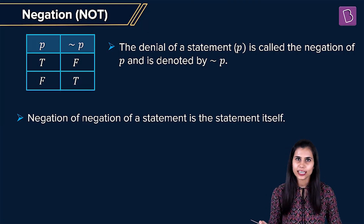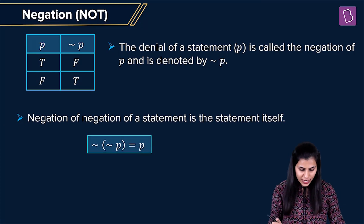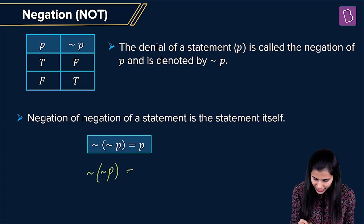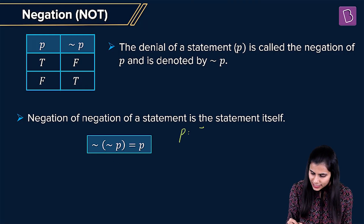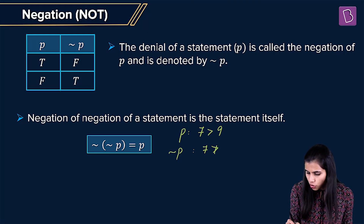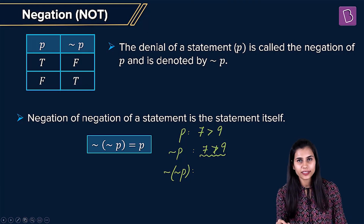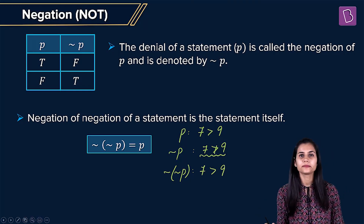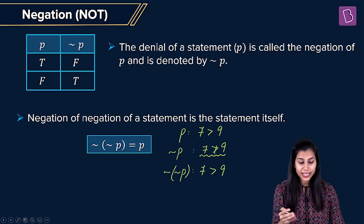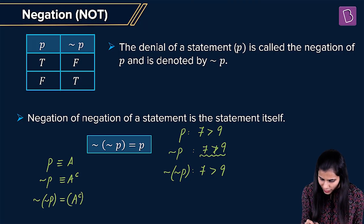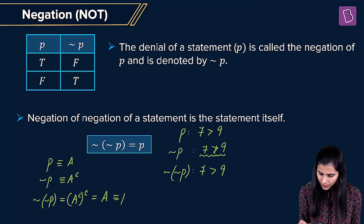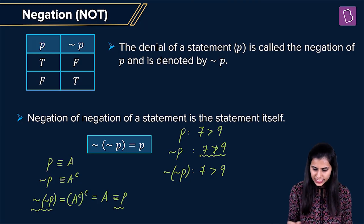A very obvious deduction: negation of negation of a statement is the statement itself, i.e., negation of negation P equals P. If P says 7 is greater than 9, negation P says 7 is not greater than 9, and negation of negation P negates that — saying yes, 7 is greater than 9. Using set theory: P is set A, negation P is A complement, and negation of negation P is complement of A complement, which is A, which is P.